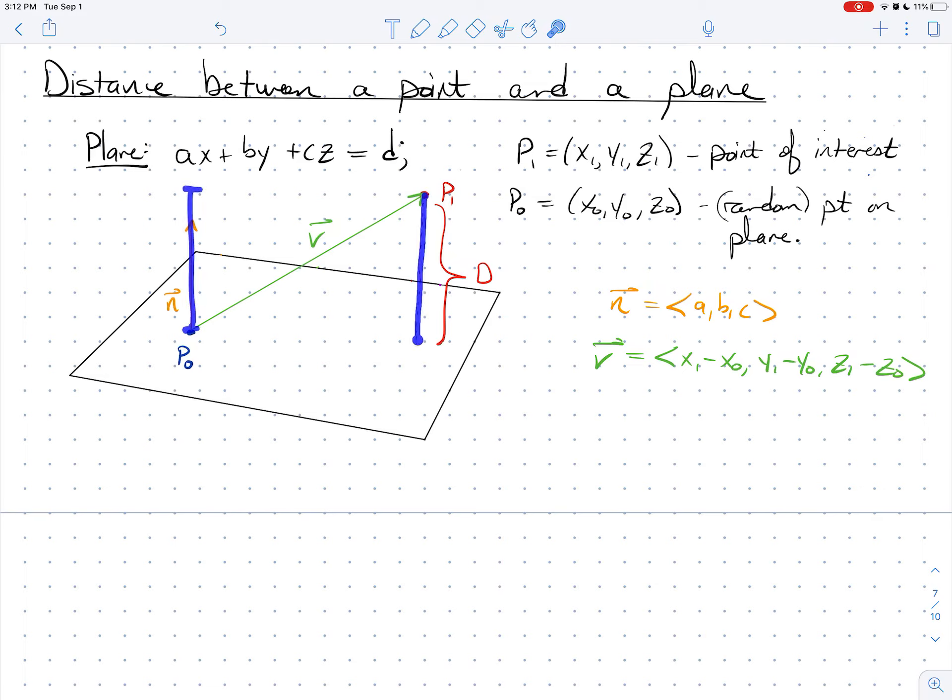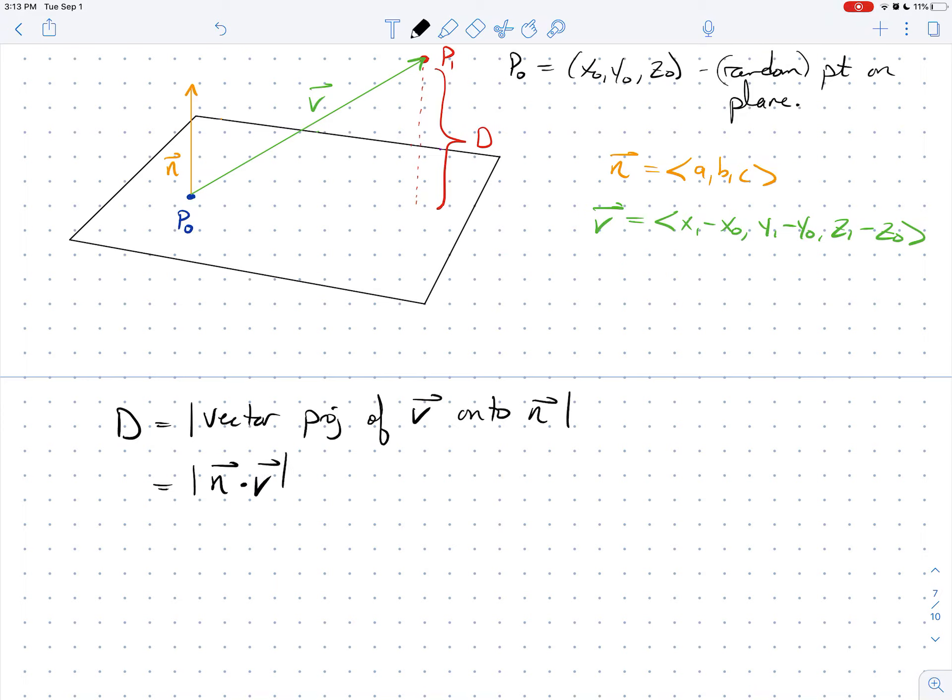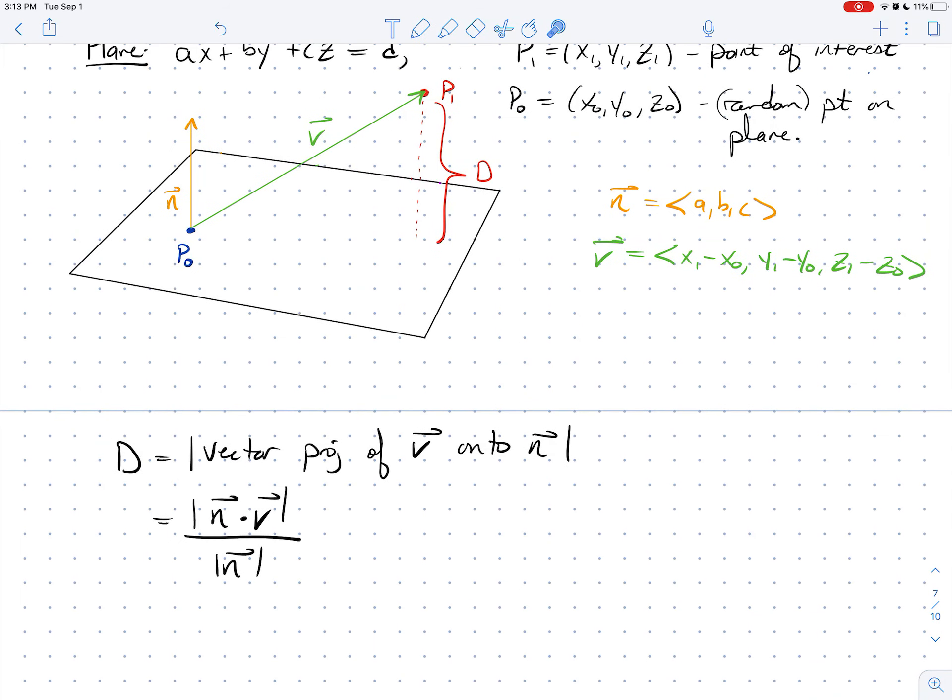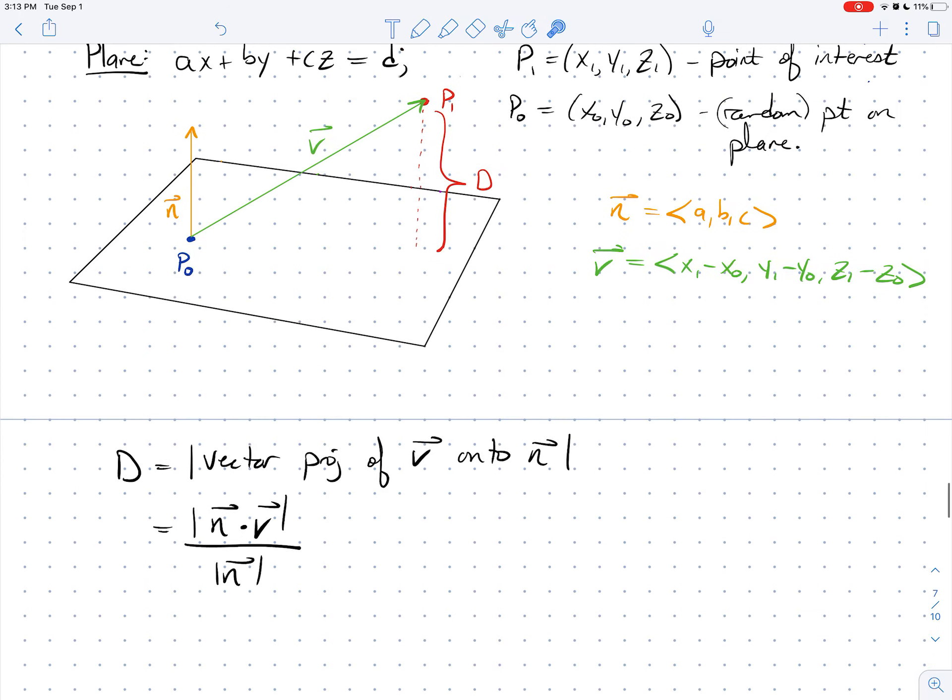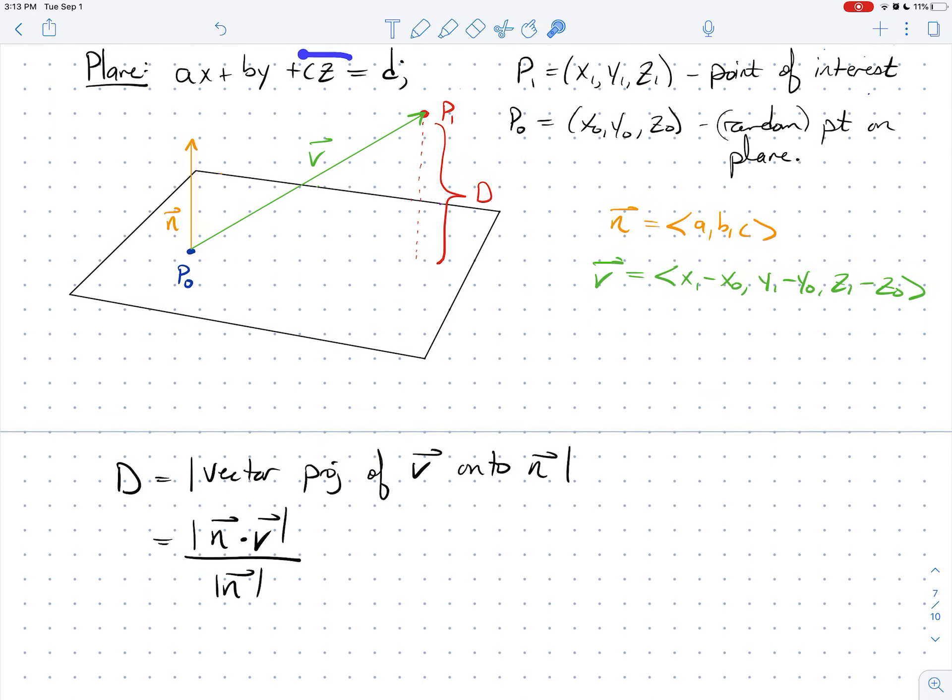And so this is just the magnitude of the scalar component. It's the absolute value of the scalar projection. So I'm going to write this as n dot V absolute value over the length of n. And it's tempting to stop here and say, well, that's a nice formula. Let's be done. But this formula, as we've written it, depends on this arbitrary point P naught. And I want to see if we can somehow get rid of P naught in our equation and just have the equation of our plane and the point P1, our point of interest. Let's see what happens. Let's work it out.